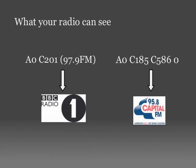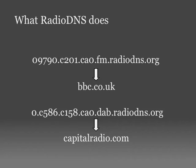So in London, an FM radio might see A0C201 when it's listening to BBC Radio 1 on FM, or it might see this bunch of numbers for Capital on DAB. Those numbers already exist. And what RadioDNS does is create a CNAME that points your radio to the broadcaster, enabling your radio to find out from the broadcaster what services the broadcaster supports over IP.